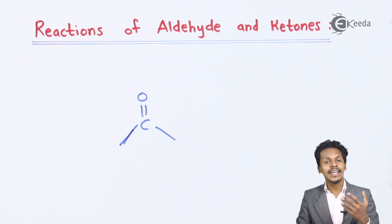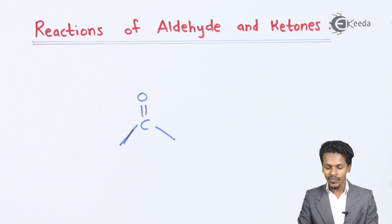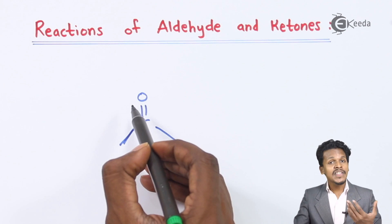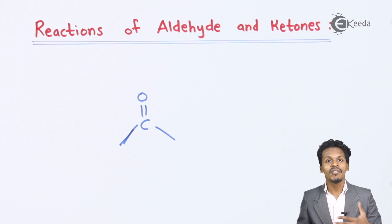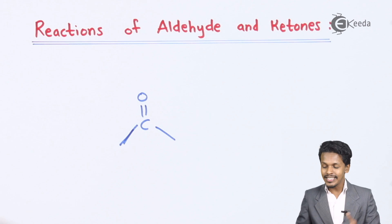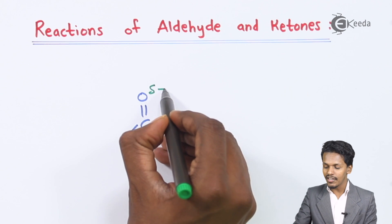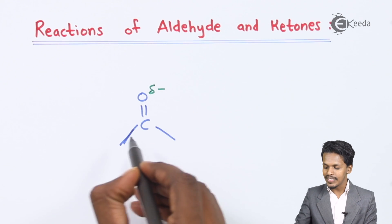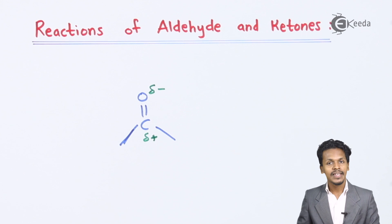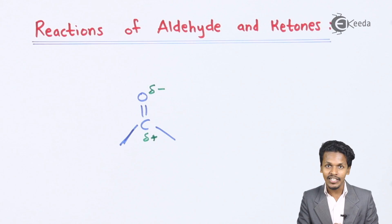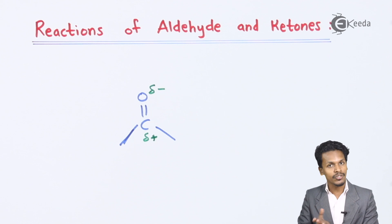This is basically how the carbonyl group looks. Talking about this carbonyl group, it consists of an oxygen atom, and we understand that the oxygen atom is more electronegative compared to carbon. So that is the reason oxygen acquires a partially negative charge while carbon acquires a partially positive charge, making aldehydes and ketones very polar in nature.